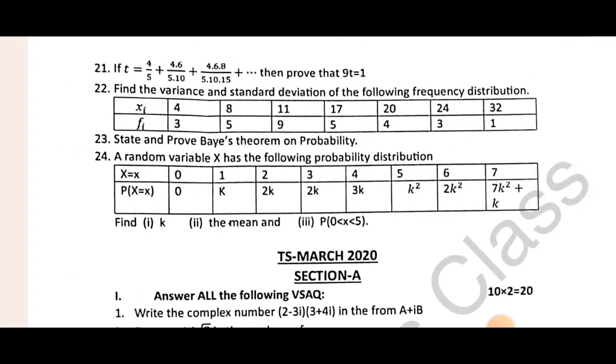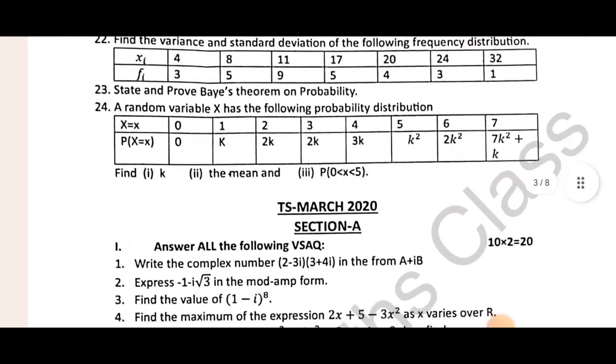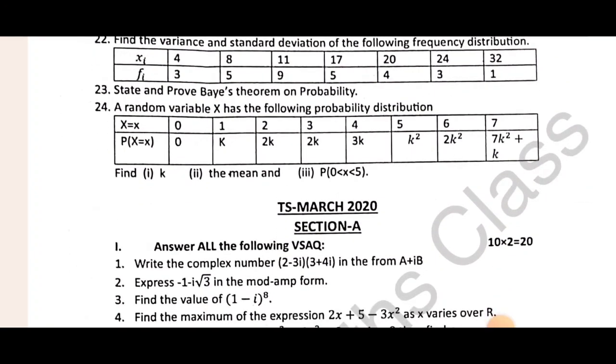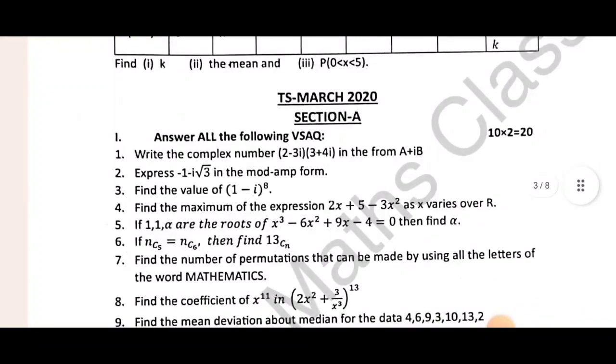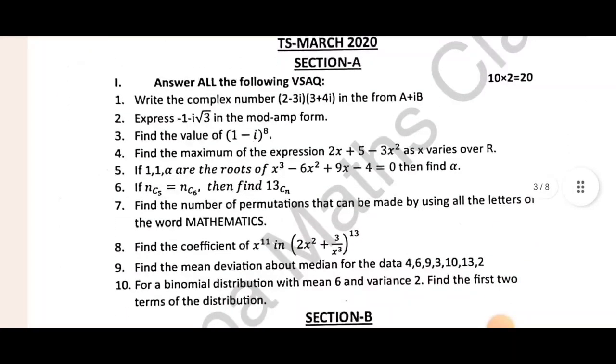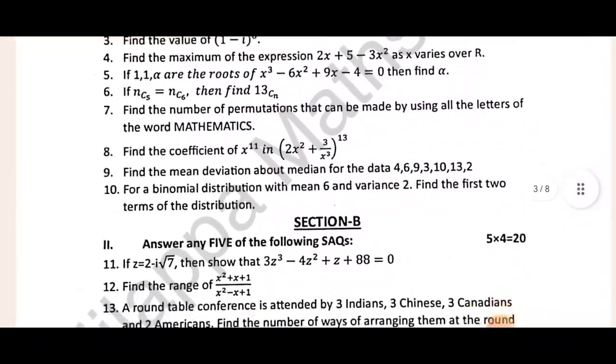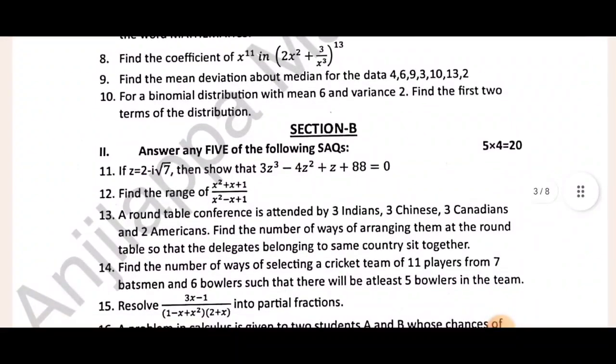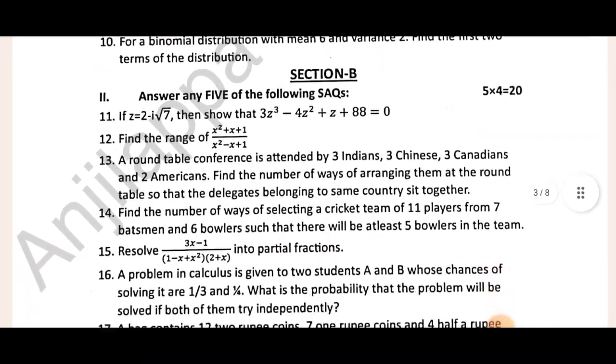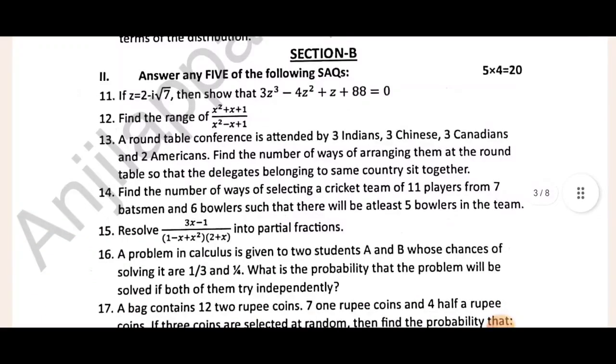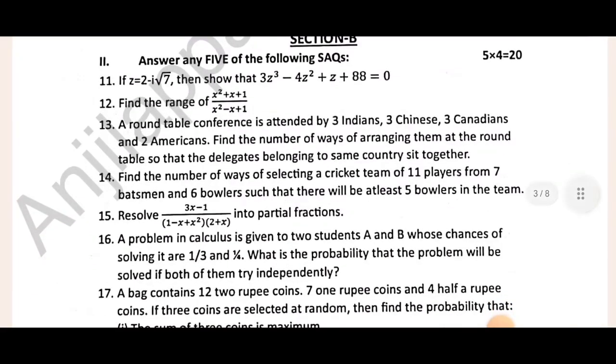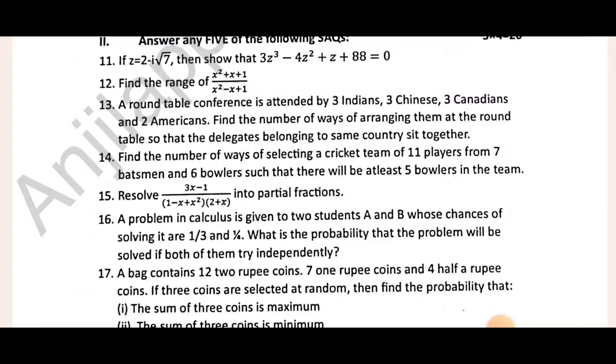Eighth question Telangana middle term, tenth question repeat AP. Eleventh 4x² - 1, twelfth problem repeat. Section C De Moivre's theorem alpha 2^n plus beta 2^n problem. Variance and standard deviation, Bayes theorem and K value find, random variance. Bayes theorem most important. Next TS March 2020 question paper.